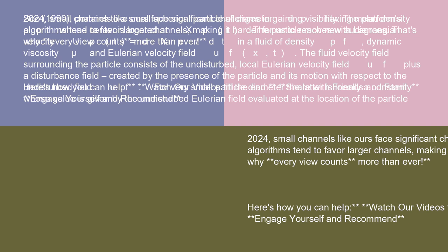The particle moves with Lagrangian velocity up(t) equals dxp/dt in a fluid of density rho f, dynamic viscosity mu, and Eulerian velocity field uf(x,t). The fluid velocity field surrounding the particle consists of the undisturbed local Eulerian velocity field uf plus a disturbance field.